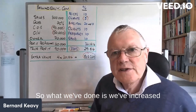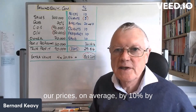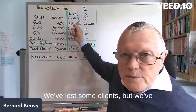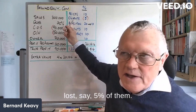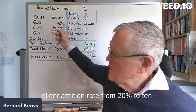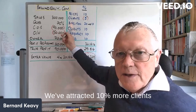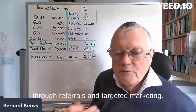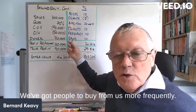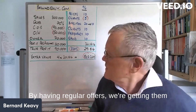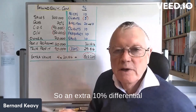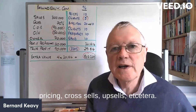By doing that we could get the average spend up by 10%. So in summary, we've increased our prices on average by 10%, we've lost about 5% of clients, we've cut our customer attrition rate from 20% to 10%, we've attracted 10% more clients through referrals and targeted marketing, we've got people to buy from us more frequently with regular offers, and we're getting them to spend more when they do — an extra 10% through differential pricing, cross-sells, and upsells.